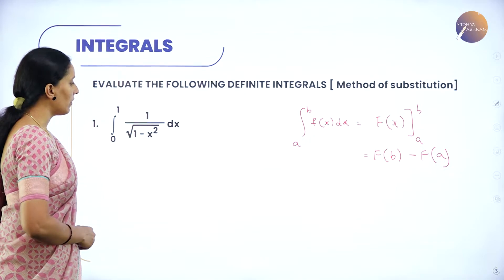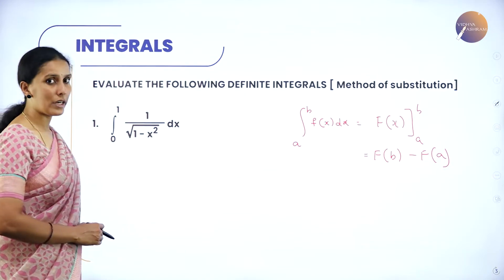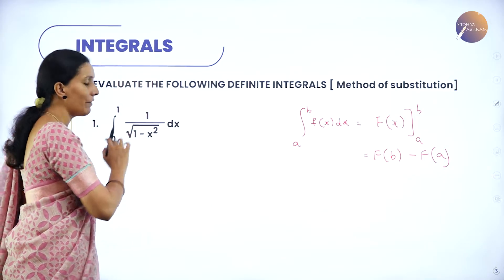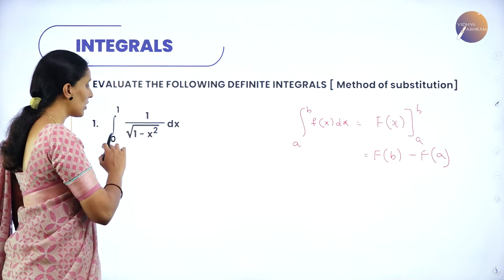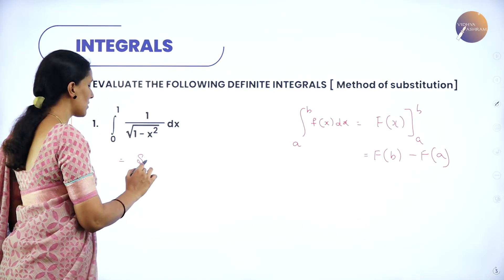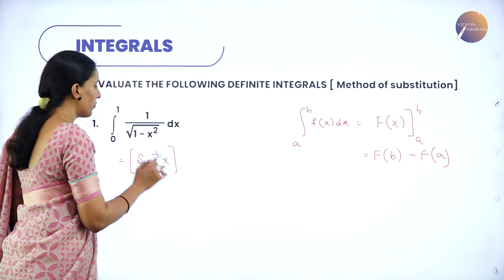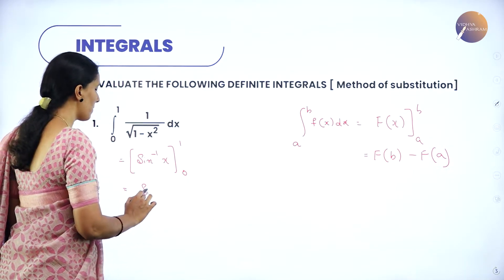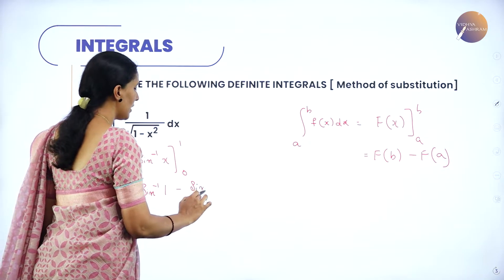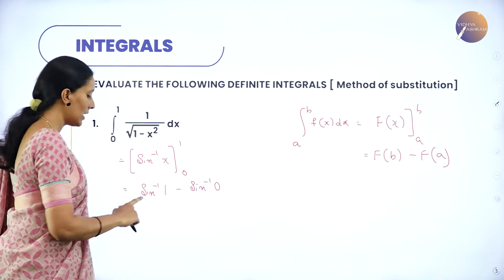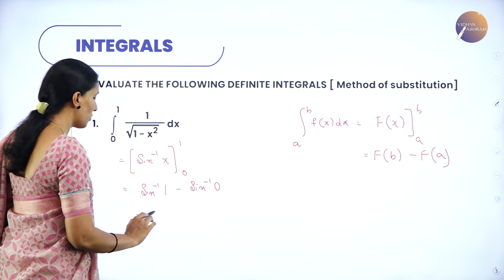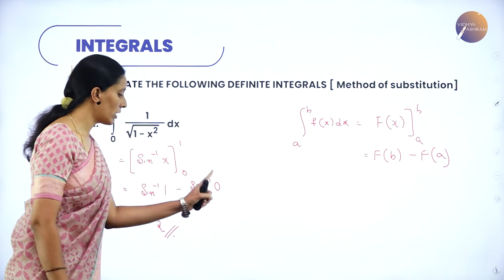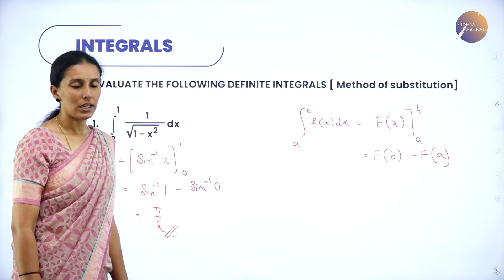Problem 1: Integral from 0 to 1 of 1 over √(1 − x²) dx. We know that 1/√(1−x²) is the derivative of the sine inverse function. Therefore, the integral of this function is sin⁻¹(x). Applying the limits from 0 to 1: sin⁻¹(1) − sin⁻¹(0) = π/2 − 0 = π/2. So the value of this definite integral is π/2.